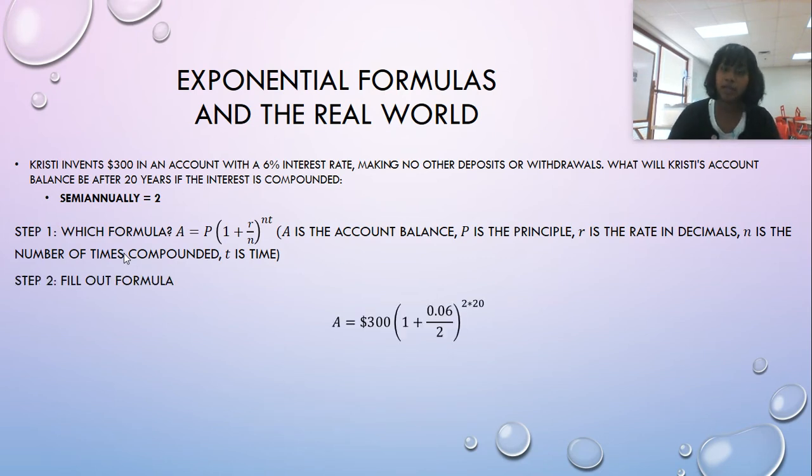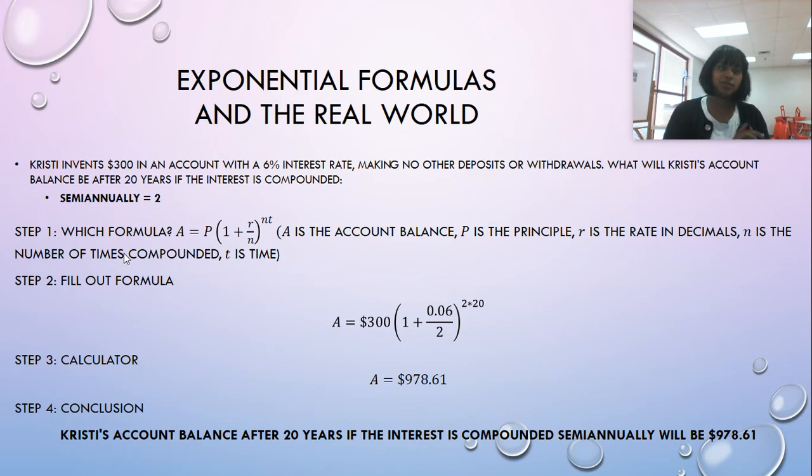So I fill out my formula, I plug in all my parts, and I throw it in the calculator, and I got $978.61. And I'm here to tell you, ladies and gentlemen, you probably save that cash a lot quicker on your own than putting it in this particular savings account. But anyway, conclusion. So here's my sentence. Christy's account balance after 20 years, if the interest is compounded semi-annually, will be $978.61.